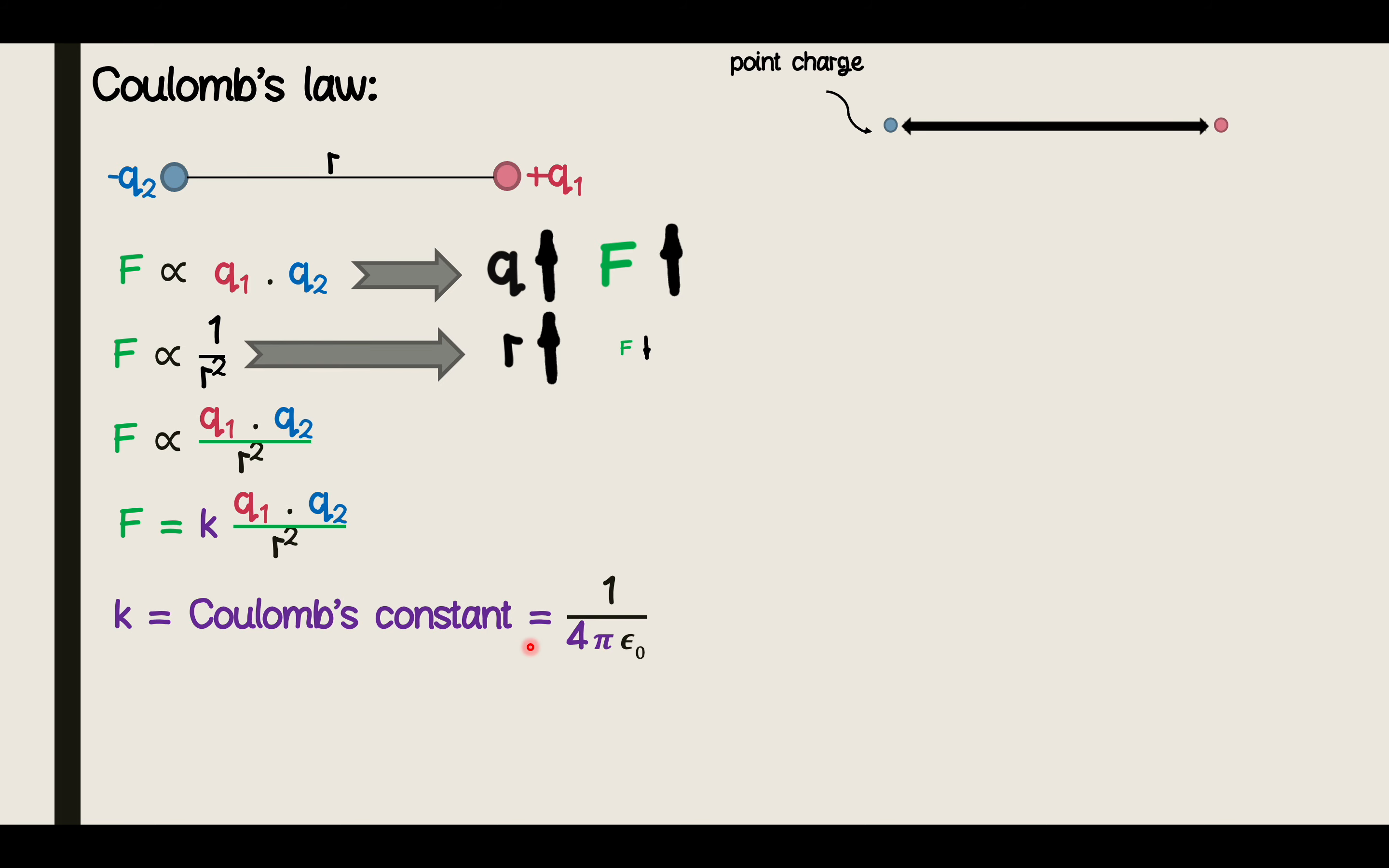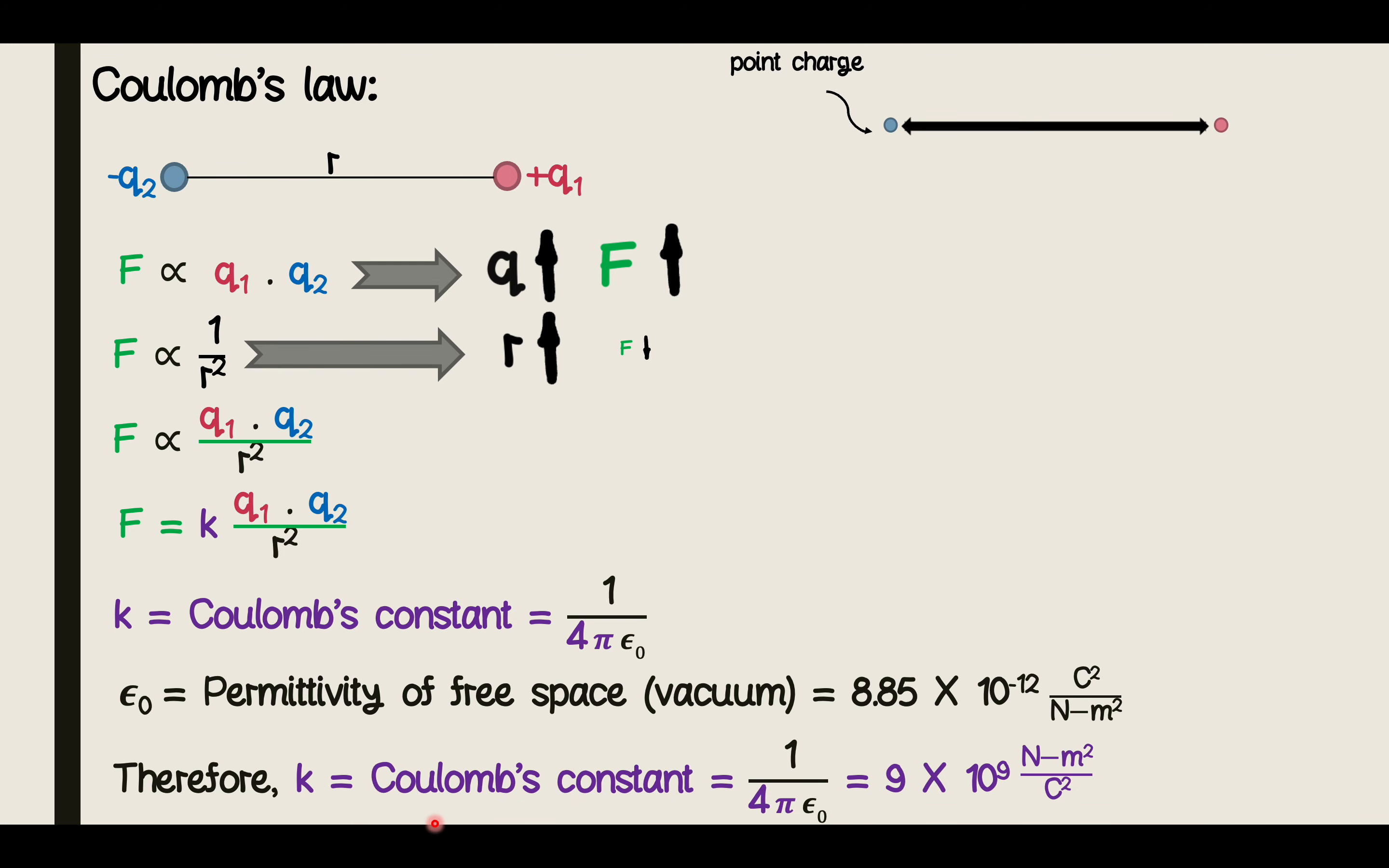The value of K is 1 upon 4 pi epsilon naught. Here epsilon naught is called as the permittivity of free space and has value of 8.85 into 10 to the negative 12th Coulomb squared per Newton meter squared. By substituting this value back we get the value of K as 9 into 10 to the ninth Newton meter squared per Coulomb squared.